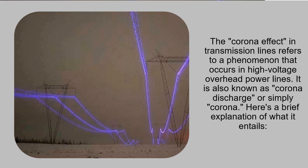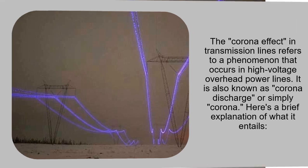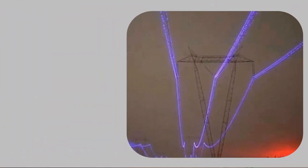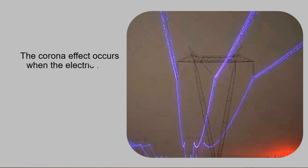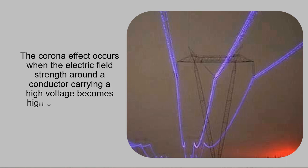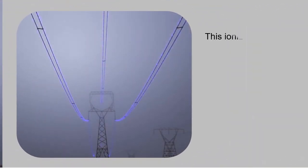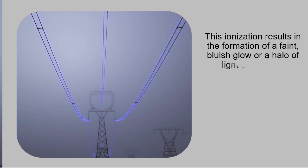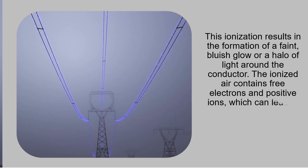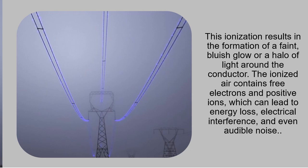Here is a brief explanation of what it entails. The corona effect occurs when the electric field strength around a conductor carrying a high voltage becomes high enough to ionize the surrounding air. This ionization results in the formation of a faint, bluish glow or a halo of light around the conductor. The ionized air contains free electrons and positive ions, which can lead to energy loss, electrical interference, and even audible noise.